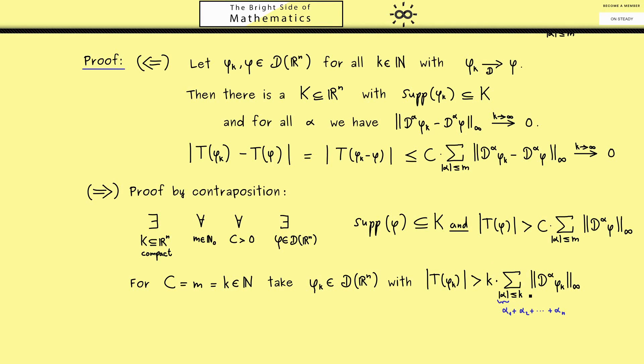Also important to note is that we have the zero multi-index as well in this sum, which means we have the supremum norm of phi_k here. Now the key idea of the proof is that we define a new test function psi_k by scaling the phi_k's. And of course, the correct scaling factor is exactly 1 over the absolute value of T of phi_k.